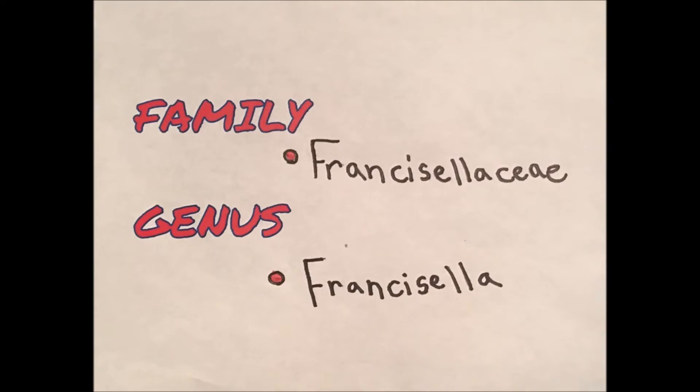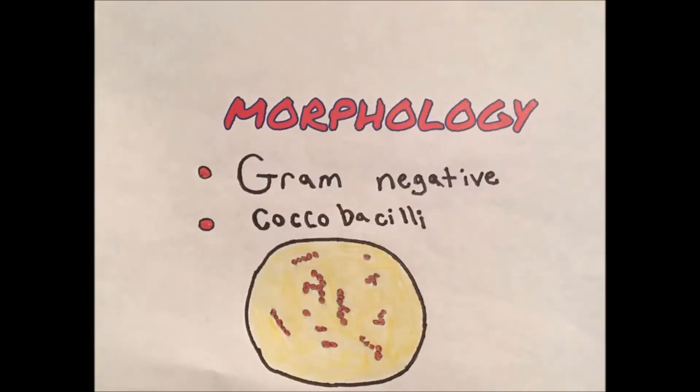Tularemia is part of the family Franciscellusae and the genus Franciscella. Tularemia is a gram-negative bacteria, which means it has a thin peptidoglycan cell wall and its cell envelope contains an additional outer membrane composed of phospholipids and liposaccharides, which face the external environment. The morphology of Tularemia is coccobacilli, which means it's a type of bacterium with a shape between cocci and bacilli, because it has very short rods which may be mistaken for cocci.